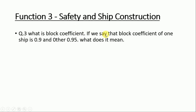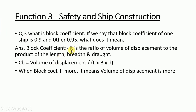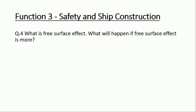Question number three: what is block coefficient? If one ship has a block coefficient of 0.9 and another has 0.95, what does it mean? The block coefficient is the ratio of the volume of displacement to the product of length, breadth, and draft. Mathematically: Cb = volume of displacement / (L × B × d). If a ship's block coefficient is higher, its volume of displacement is greater — so a ship with Cb of 0.95 displaces more volume.